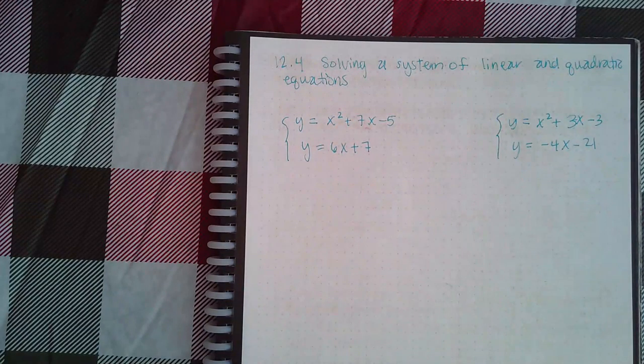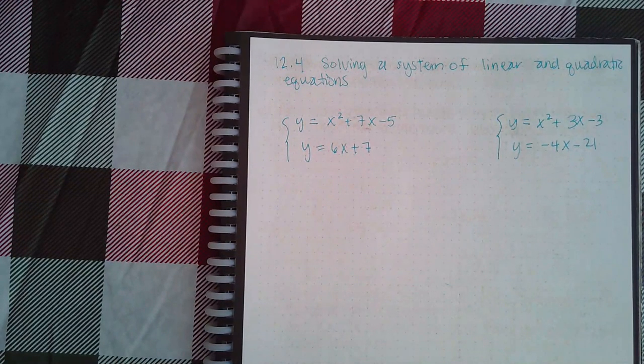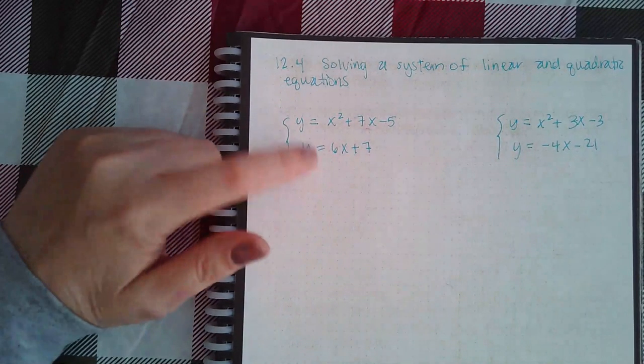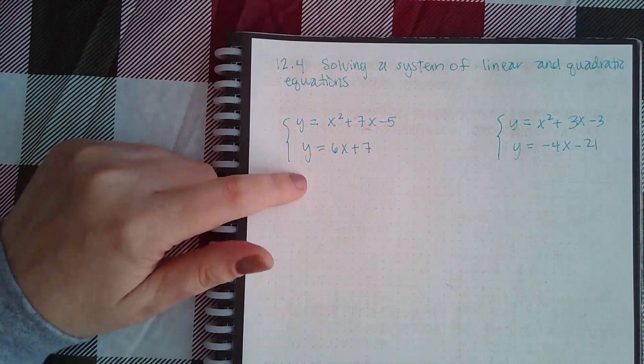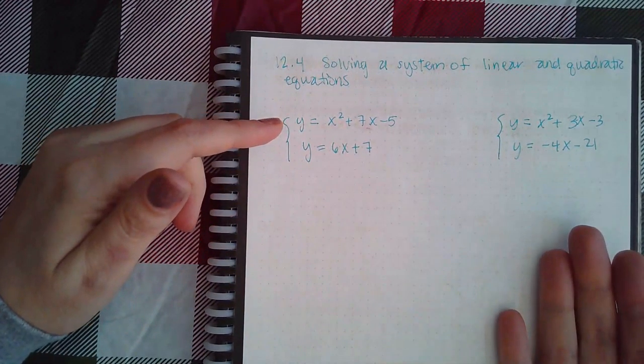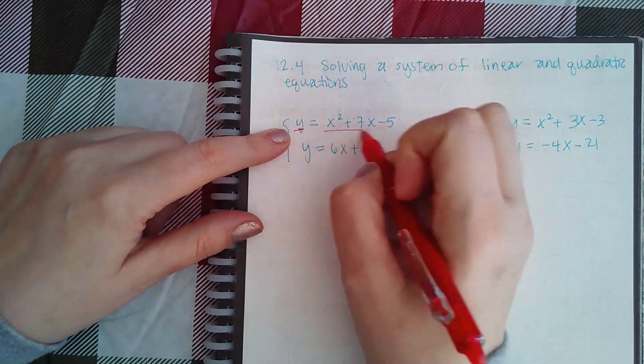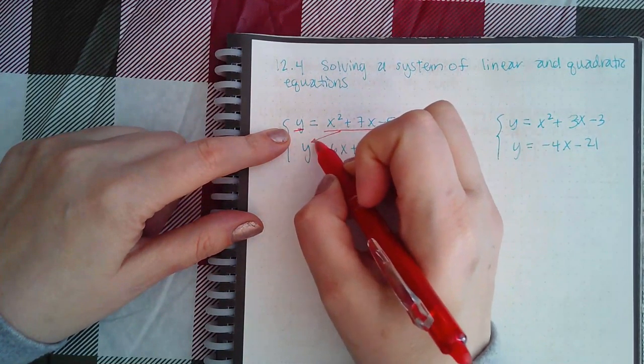Since you already have y all by itself in both of these equations, you only need the y variable by itself in one equation. If I choose this one, then if y is equal to all of this, that's what I'm going to substitute into the other equation.